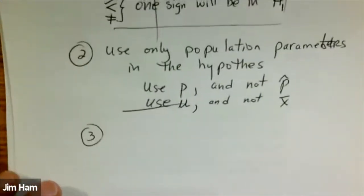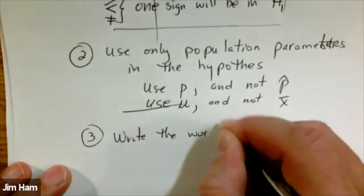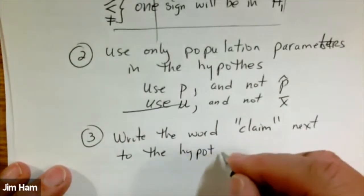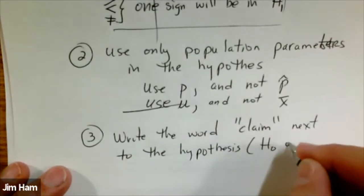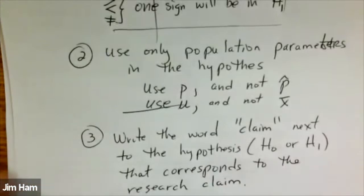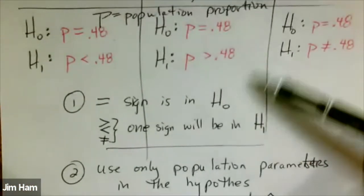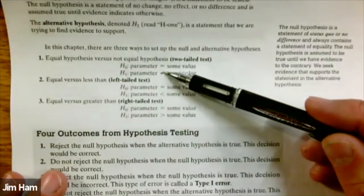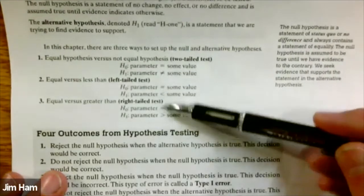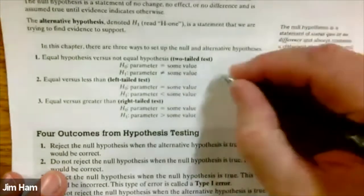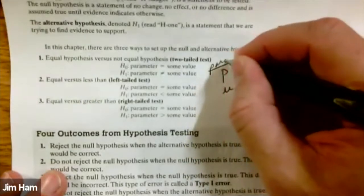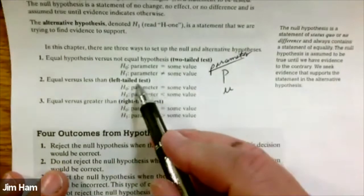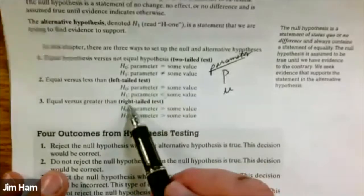The third rule for hypotheses is that we write the word 'claim' next to whichever hypothesis — either the null or the alternative — corresponds to the claim. Remember these three rules and they'll put you on the right track. Two-tailed tests use not equal to; the null always has equal to. Left-tailed test uses less than; right-tailed test uses greater than. The parameters for our chapter 10 problems will either be p or mu.